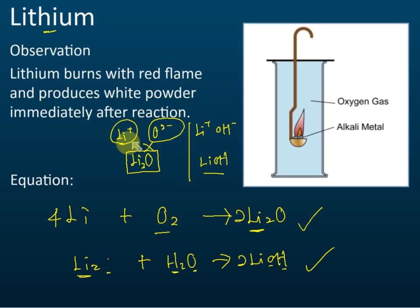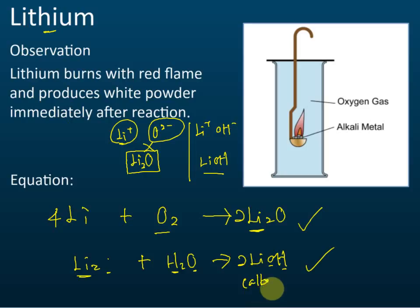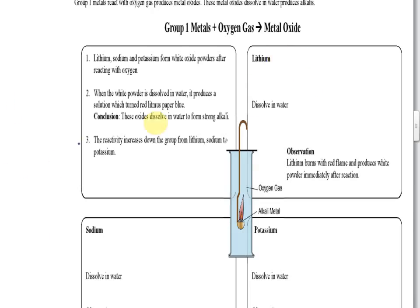So for the reaction with oxygen, you need to know two equations: Group 1 metal with oxygen produces a metal oxide, and this metal oxide reacts with water to produce alkali — the hydroxide. For example, lithium with oxygen produces lithium oxide (4Li + O₂ → 2Li₂O), and then lithium oxide dissolved in water produces lithium hydroxide (Li₂O + H₂O → 2LiOH).